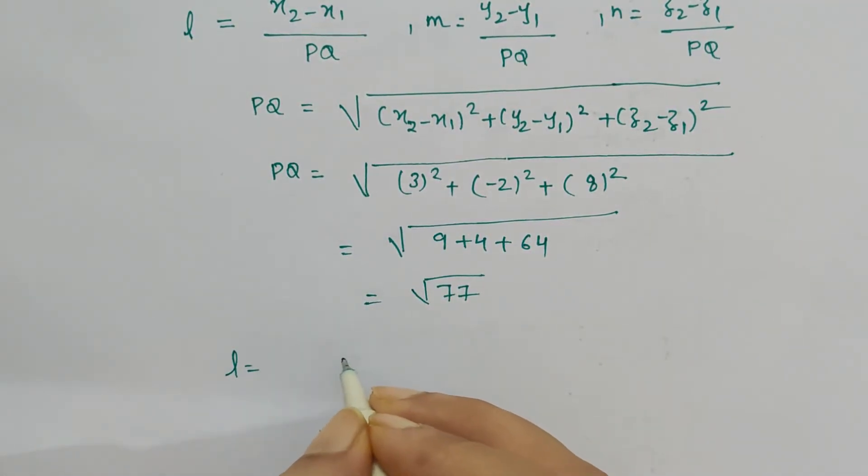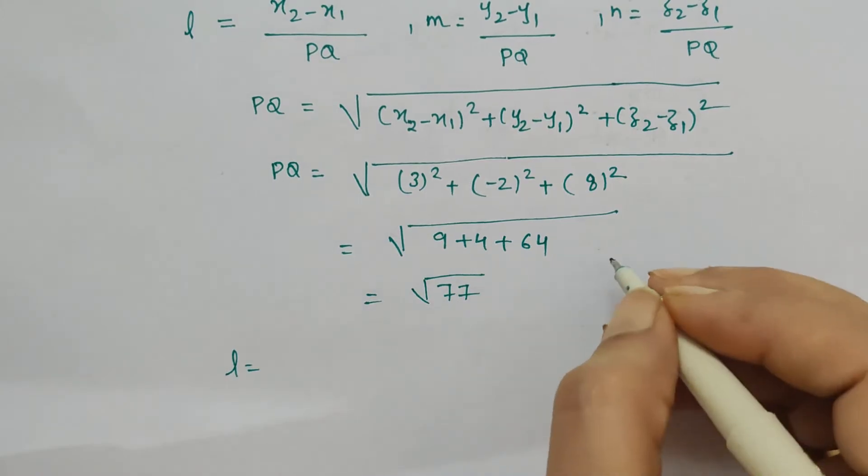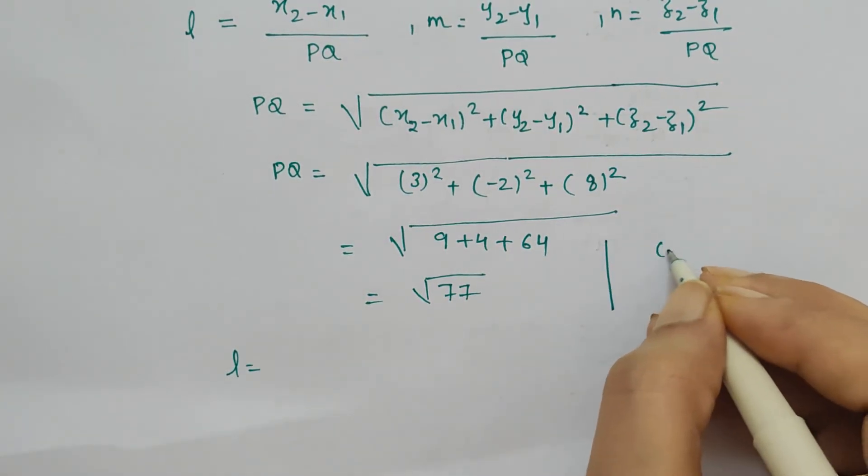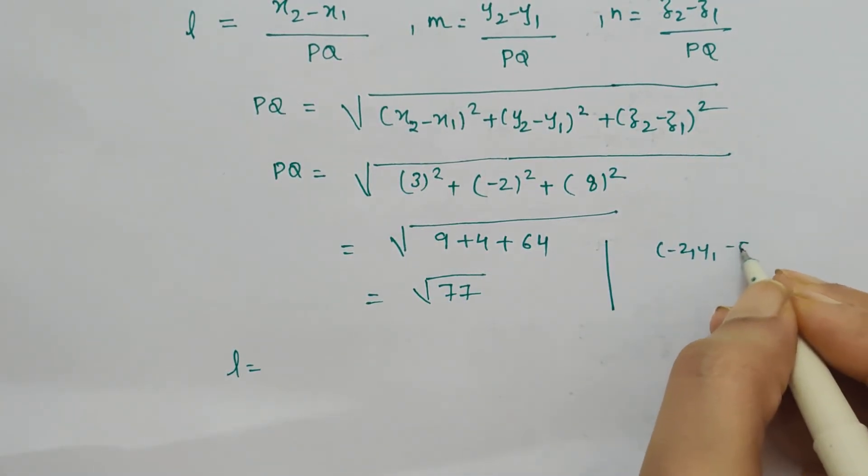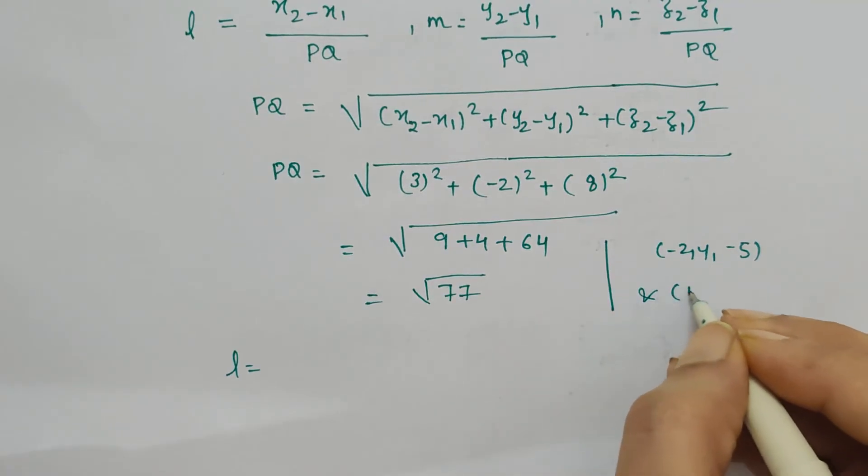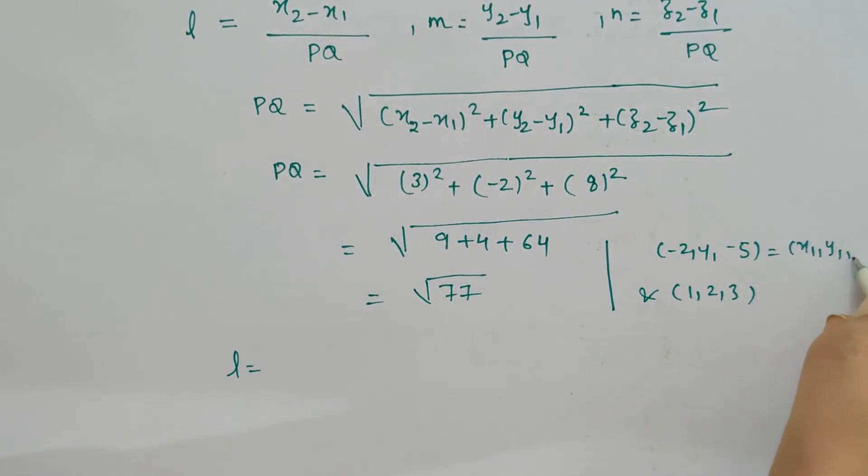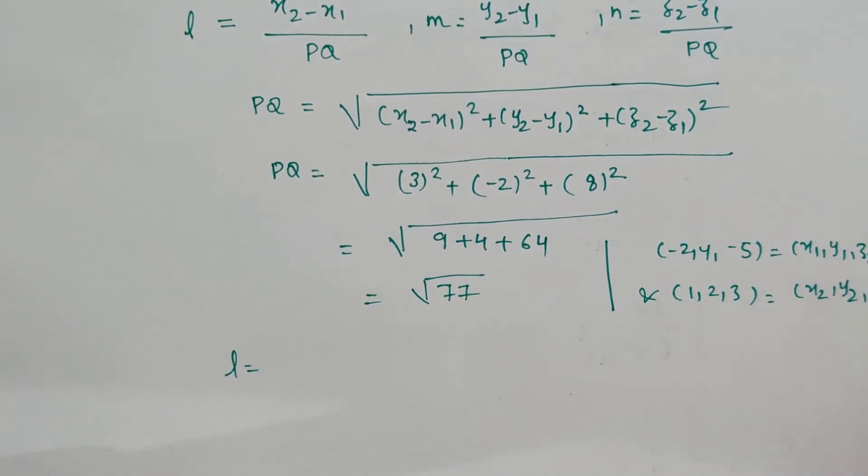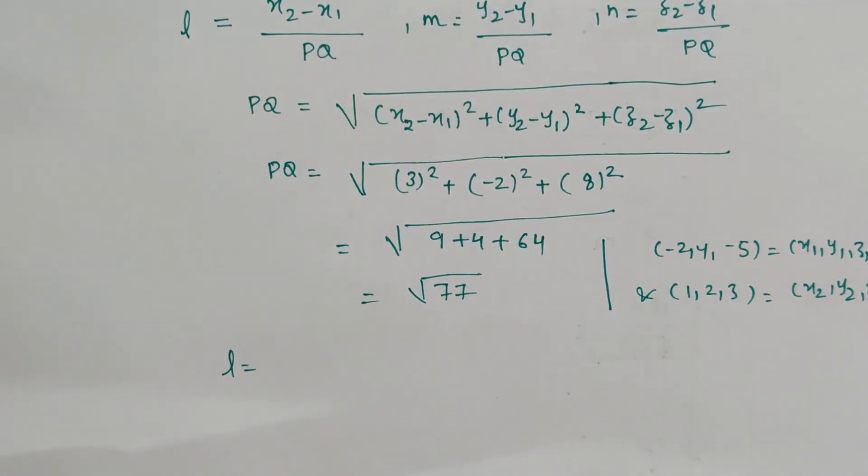Hence the required direction cosine will be l is equal to x2 minus x1. With respect to the points given, which are minus 2, 4, minus 5 and 1, 2, 3, this we have considered x1 y1 z1 and this is x2 y2 z2. So this will lead us to: